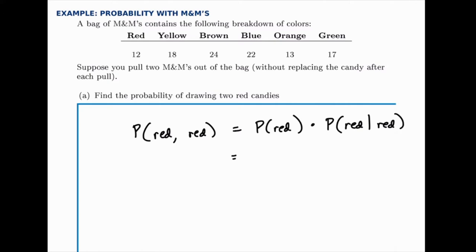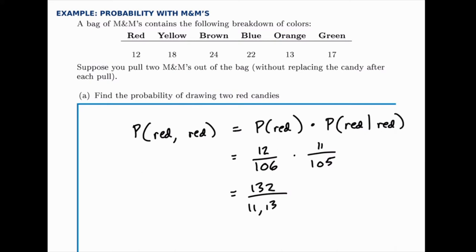There are 12 red candies and if you add all the total counts together you'll find there's a total of 106 M&Ms in the bag, so the probability the first one is red is 12 out of 106. Now if we assume that happened, there are 105 candies left and only 11 of them are red, since we're holding one out. So that second probability is the conditional probability given the first one was also red. When we multiply those we get 132 out of 11,130, which corresponds to about 0.0119.